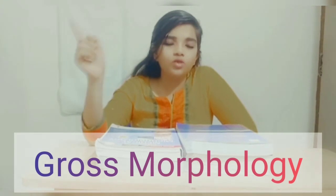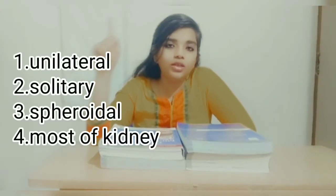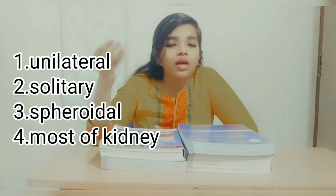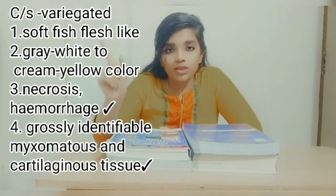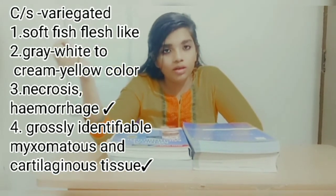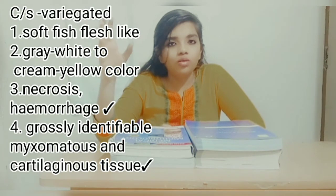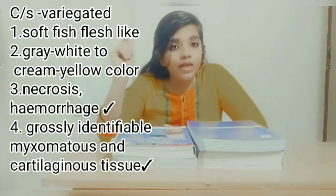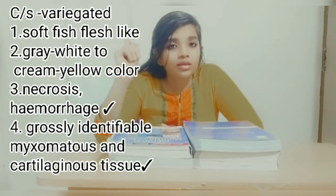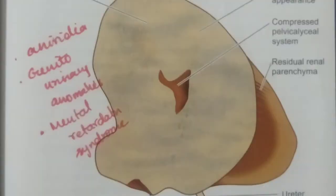Now let's talk about morphology under two headings: gross and microscopic features. Gross features: the tumor is unilateral, solitary, spheroidal, and occupies most of the kidney. Very rarely it can be bilateral. On cut surface, it shows a variegated appearance — soft, fish-flesh-like, grey-white to cream-yellow in color. Some areas of hemorrhage and necrosis are present, and grossly identifiable mixed areas of cartilaginous tissues can be seen.